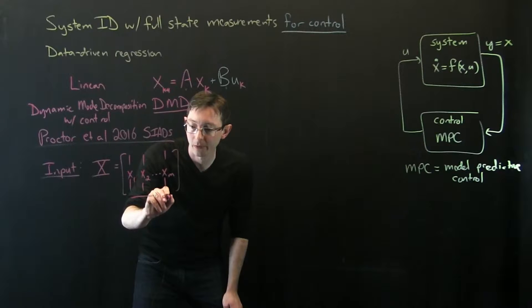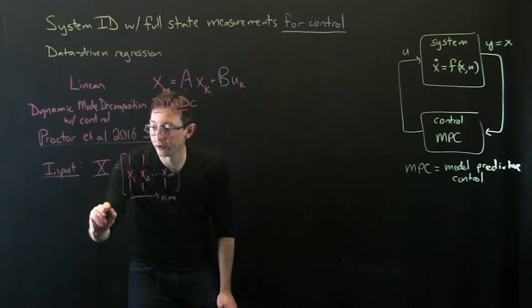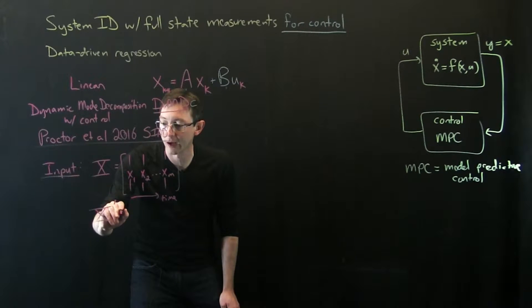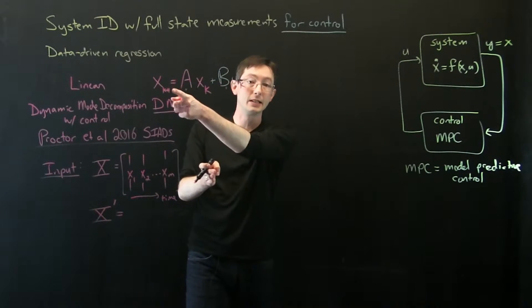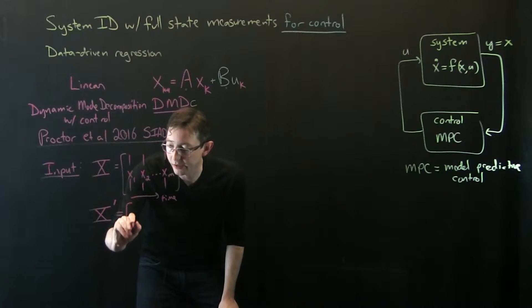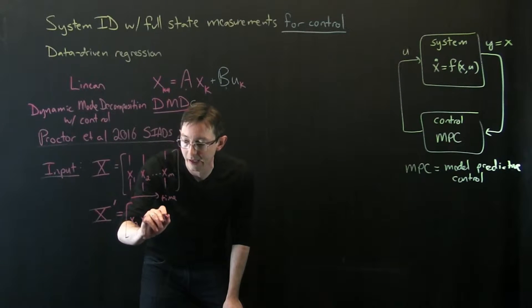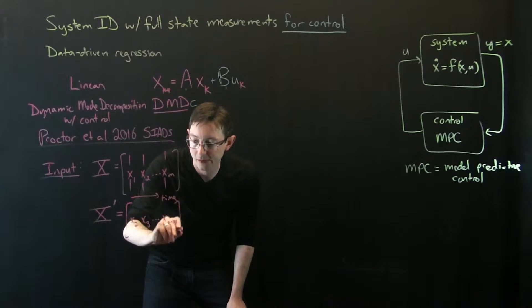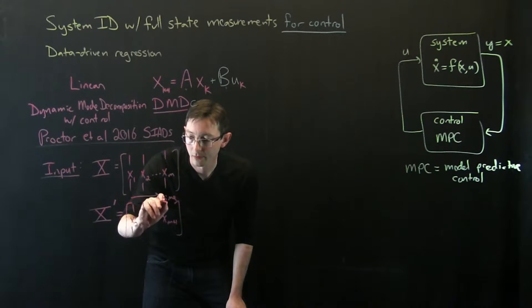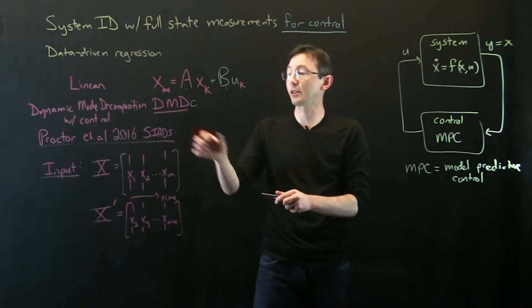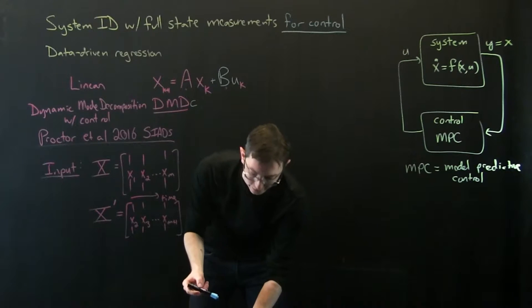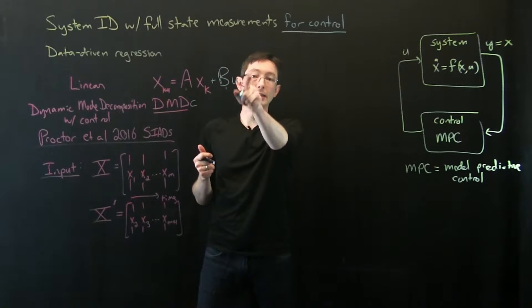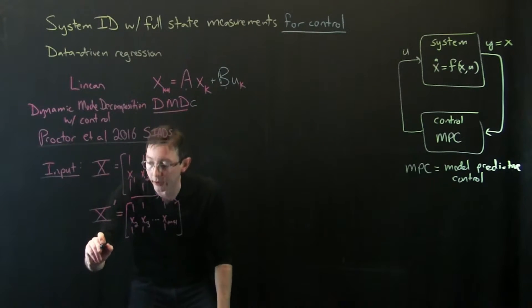This is time going from left to right. I'm also going to assume that I have what's called x prime. And x prime is just the snapshot matrix shifted one delta t in the future. So it starts at x2, x3, and it goes to x at m plus 1. This is the same basic assumption that I start with with the regular dynamic mode decomposition. But then what I assume I also have, I have access to a snapshot history of my control input, and I think Josh called this upsilon.